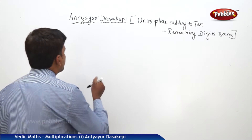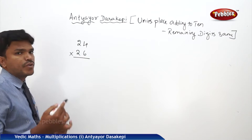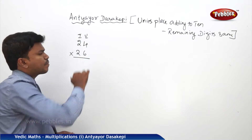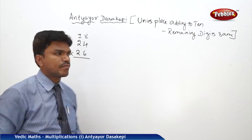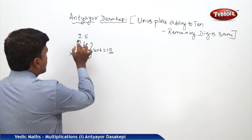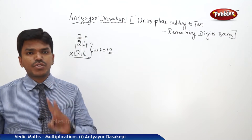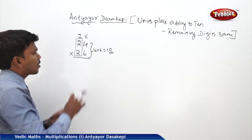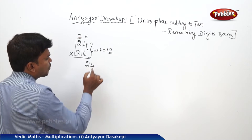For example, suppose I want to multiply 24 into 26. The units place has 4 and 6 — what is 4 plus 6? It is 10. And the tens place digits are both 2, so they are the same. Both conditions are applicable. The first step: multiply the units digits. What is 4 into 6? It is 24. So write 24 here.